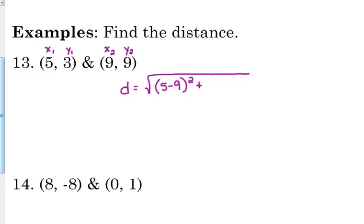So the order really doesn't matter. So you get the x's together and the y's together. 3 minus 9 and square that. And we're taking the square root of all of that.